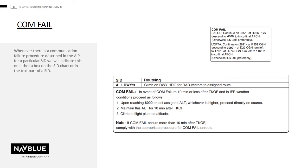As previously mentioned in general, comfail could be found in the text pages. If the comfail is relevant to the particular procedure, then the comfail will be found on the SID chart.